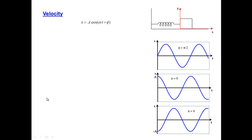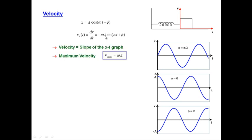Moving on to discussion of velocity and acceleration: if we start with the position versus time function — the general case, a cosine of omega t plus phi — and simply differentiate that, we get the x component of the velocity, dx/dt, which is minus omega a sine of omega t plus phi. Since the sine function oscillates between plus 1 and minus 1, the maximum possible velocity is simply omega times a — the term out in front of the sine function.